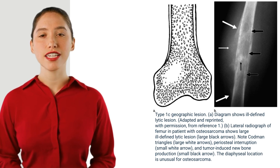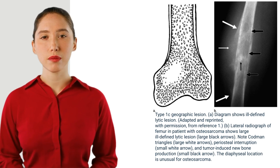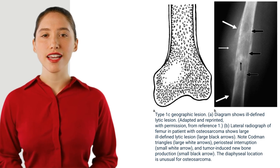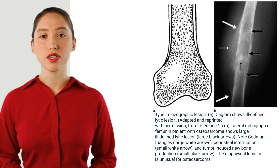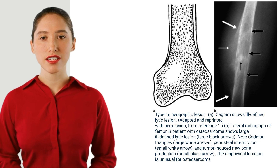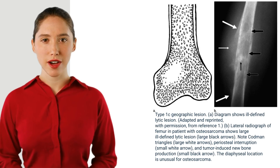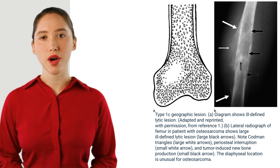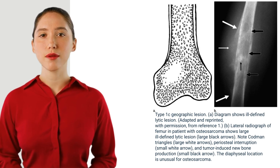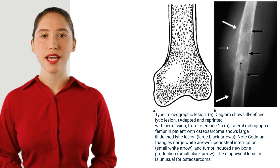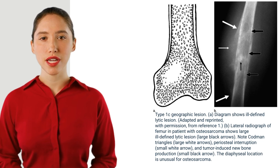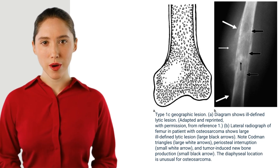Type 1c geographic lesion: diagram shows ill-defined lytic lesion. Lateral radiograph of the femur in a patient with osteosarcoma shows a large ill-defined lytic lesion (large black arrows). Note Codman triangles (large white arrows), periosteal interruption (small white arrow), and tumor-induced new bone production (small black arrow). The diaphyseal location is unusual for osteosarcoma.